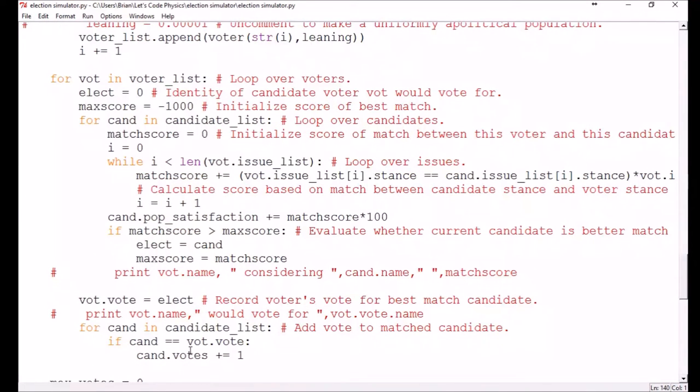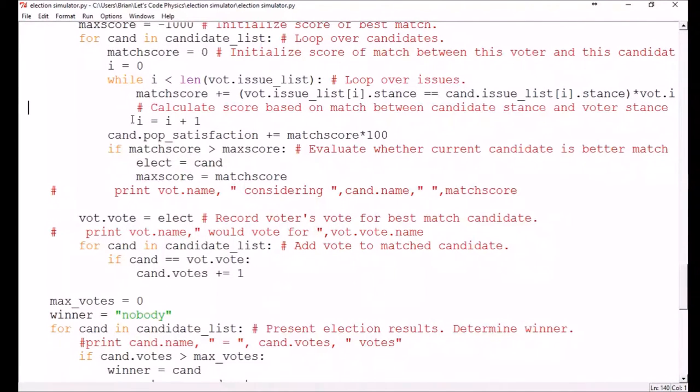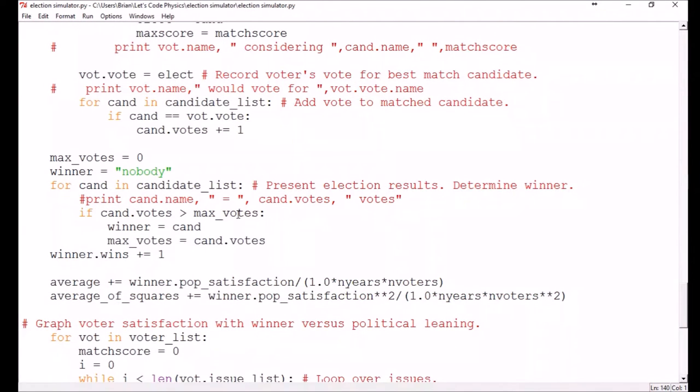After examining all the candidates, the voter's vote is assigned to the candidate with the highest score and that candidate's number of votes increases by one. We also add the match score to that candidate's population satisfaction so that we can keep a record of how satisfied all the voters are with the eventual winner. After all the voters have assigned their votes, the winner is determined by comparing each candidate's number of votes, and that candidate's number of wins increases by one so that we can compare the candidate's number of wins over the course of many years.